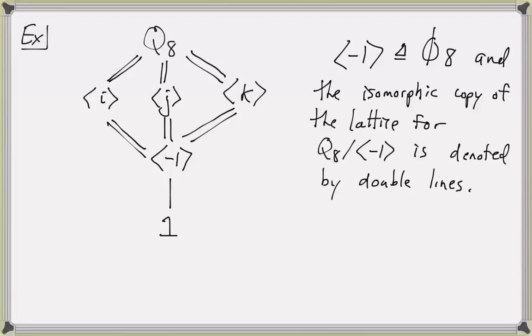To summarize the last few lessons: we use homomorphisms, quotient groups, and isomorphism theorems to study the structures of groups. The idea is that if we have enough information about some normal subgroup N of a group G and enough information about the quotient group G mod N, then we can piece together this information to gain information about the structure of G. All of these theorems depend on having a non-trivial normal subgroup of G.